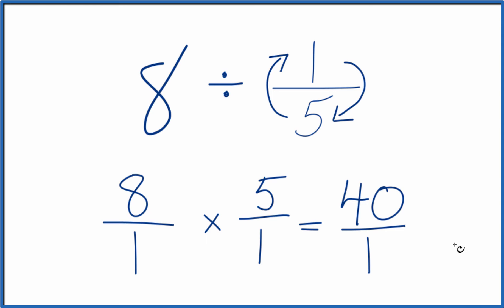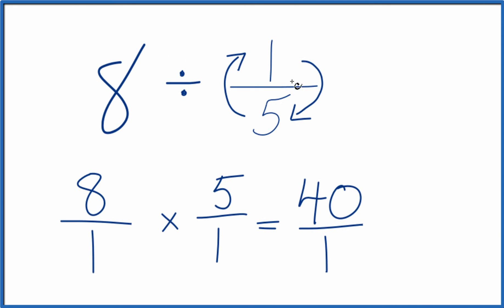40 over 1, that equals 40. So in answer to our question, 8 divided by 1 fifth, that equals 40.